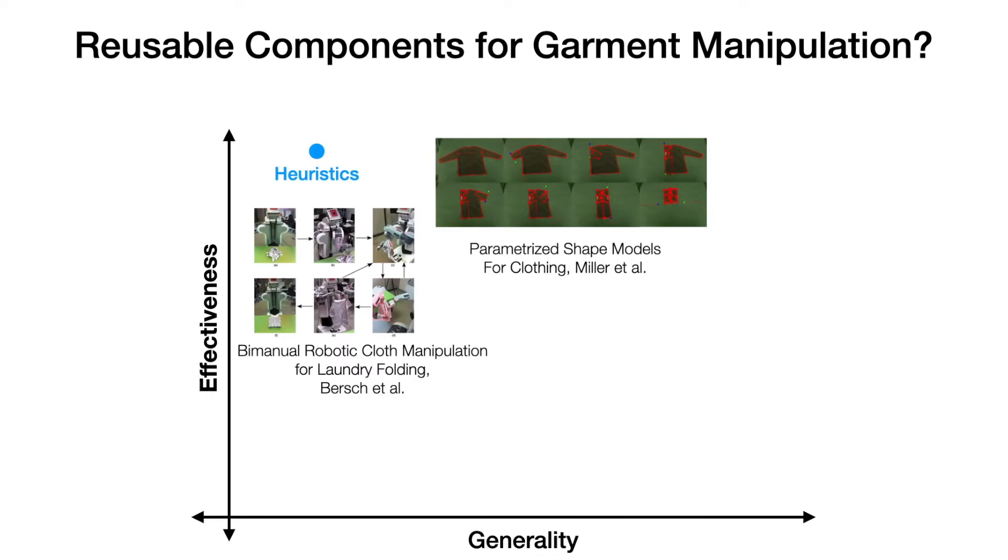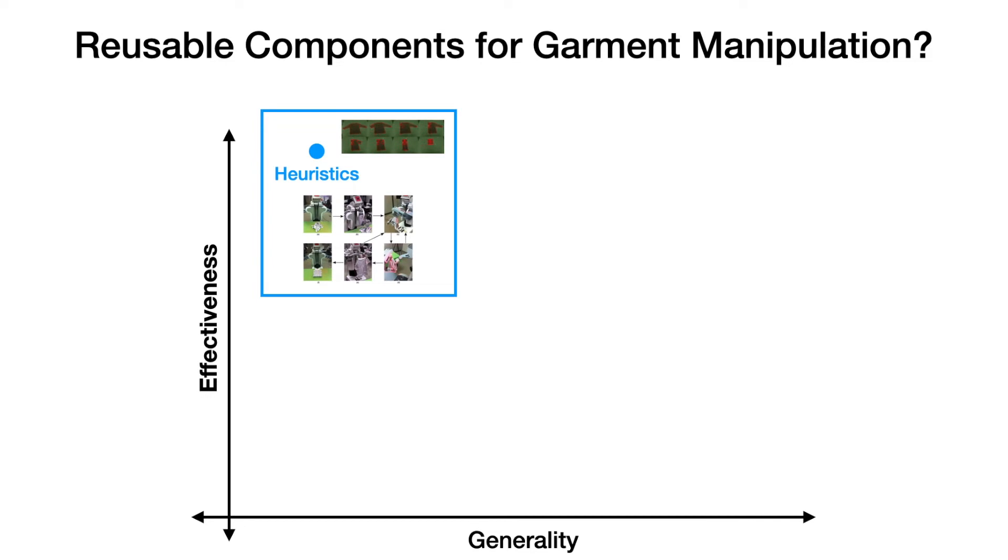On the specific end, we have heuristics, which work really well under strong assumptions on cloth types and configurations, but most of these assumptions are unrealistic for garments found in natural environments.